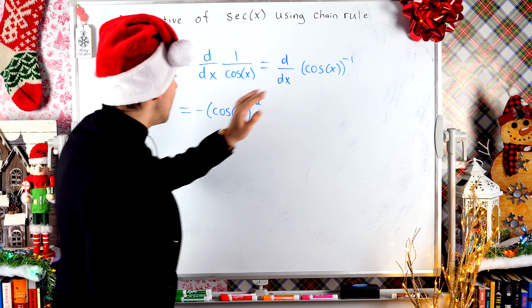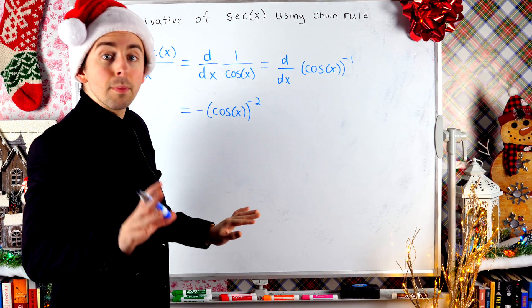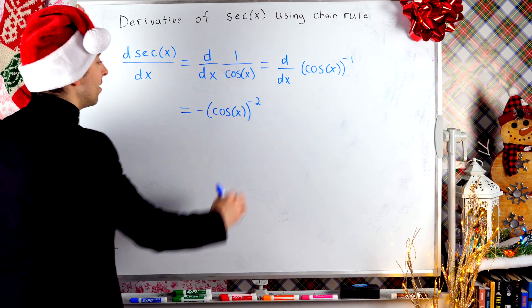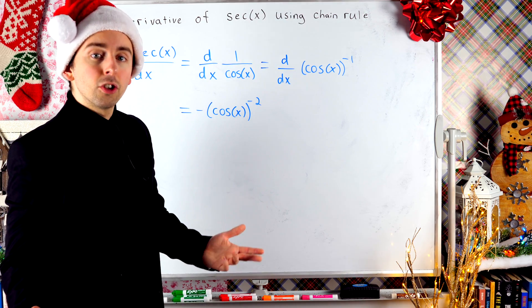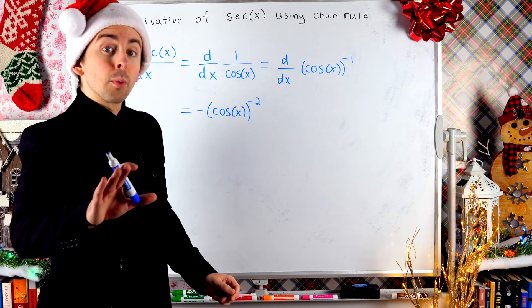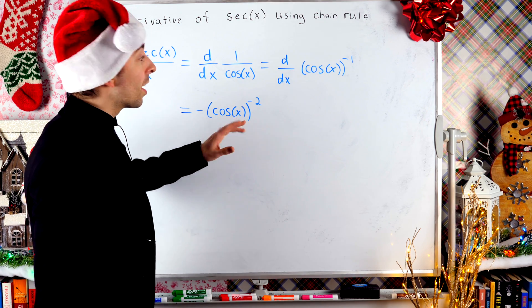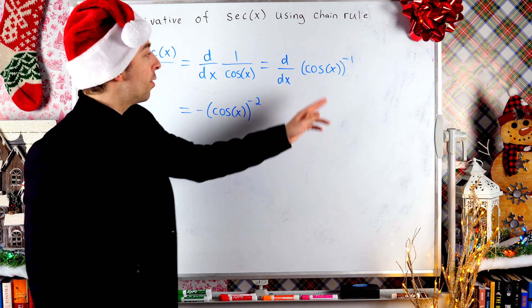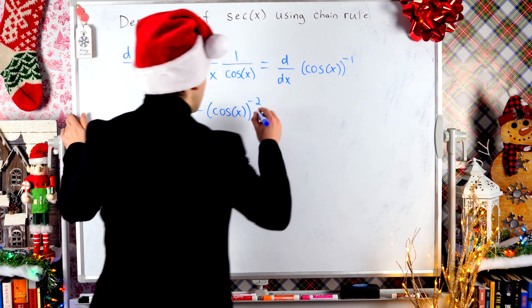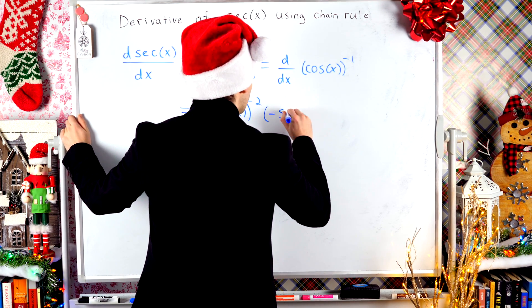And then this is to the power of negative two, because I reduce that exponent by one. But remember, we are doing the chain rule. So now I've got to multiply by the derivative of the inside function. The derivative of cosine, you may recall, is negative sine. And so this is my derivative.